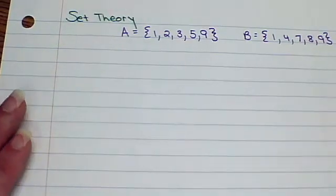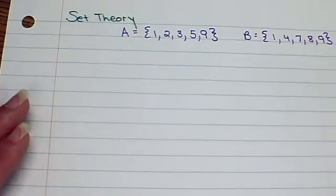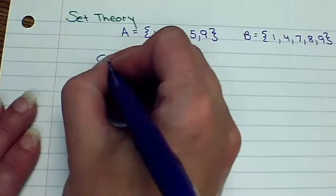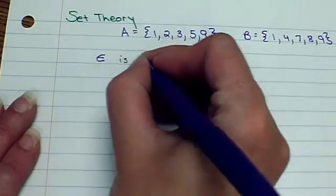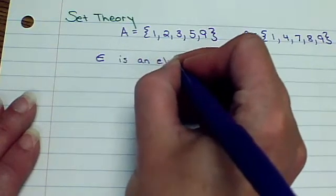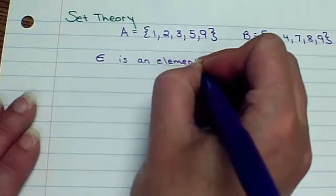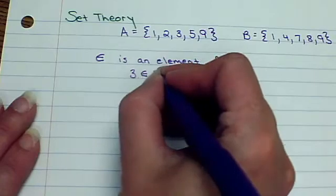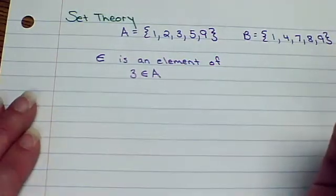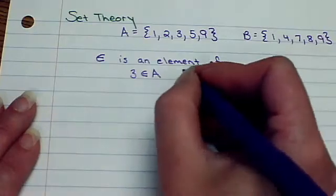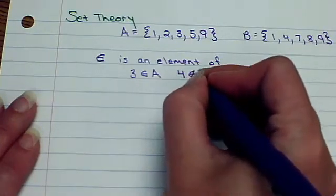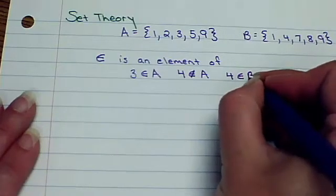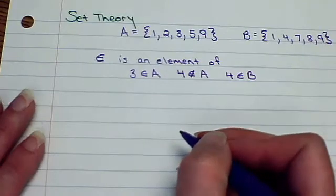Alright, so basics of set theory. First of all, we have some symbols that we need to look at. This first one means is an element of. So we could say that 3 is an element of A, right? We could say that 4 is not an element of A. 4 is an element of B. So if you want to do a not, you just cross it out.